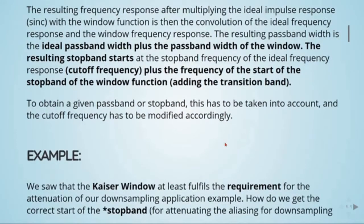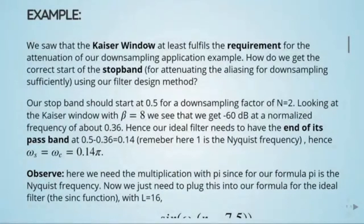To obtain a given pass bandwidth or stop bandwidth, this has to be taken into account and the cutoff frequency has to be modified accordingly. Let's take a look at this example. We saw that the Kaiser window at least fulfills the requirement for the attenuation of our downsampling application example. How do we get the correct start of the stop band for attenuating the aliasing for downsampling sufficiently using our filter design method?